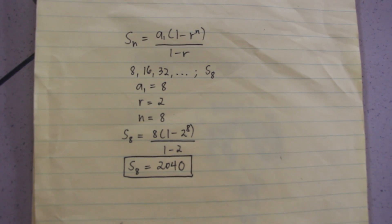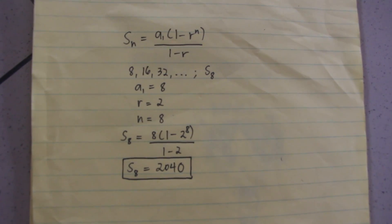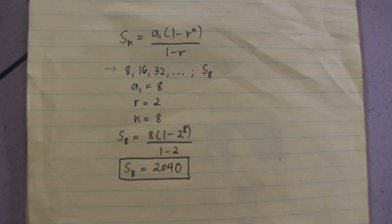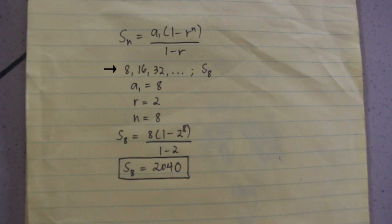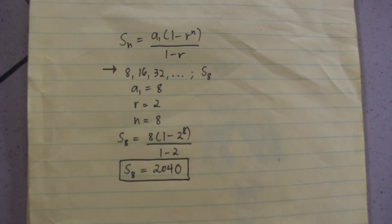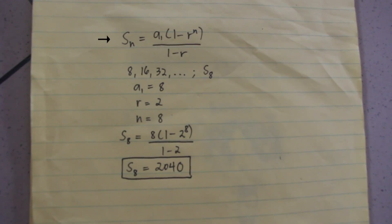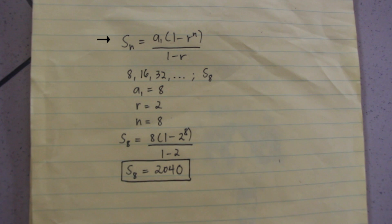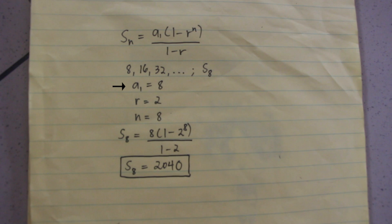Anyway, now we use this formula to solve our given problem. Our problem states that there is a geometric sequence of 8, 16, 32, and so on, and we are looking for the sum of the first 8 terms denoted as S sub 8. As we know the formula, all we need to do now is plug in the needed values. Clearly, a sub 1 or the first term is 8.